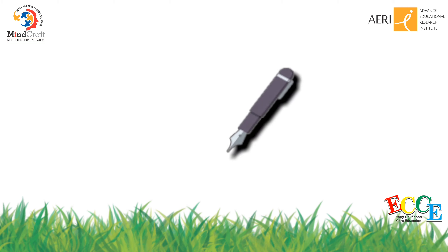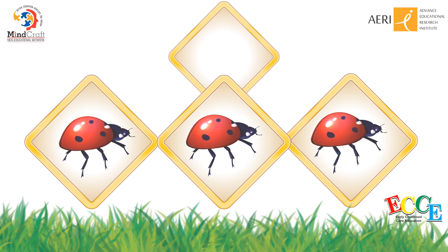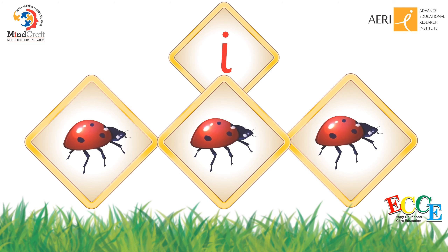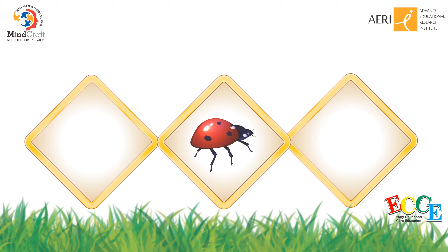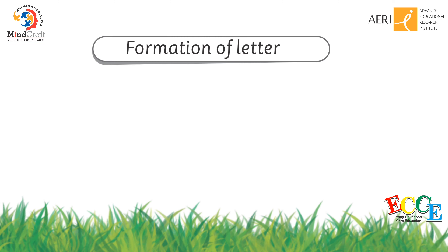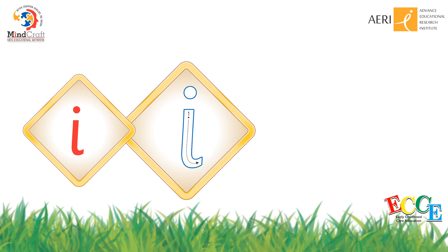What is it? Ink. Say i — ink. The initial sound of ink is i. A pen is filled with ink. This is an insect — insect. The initial sound of insect is i.